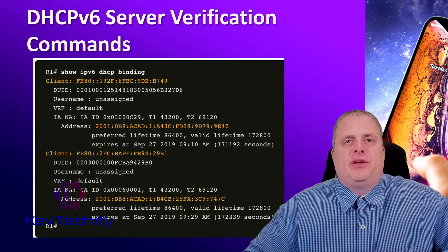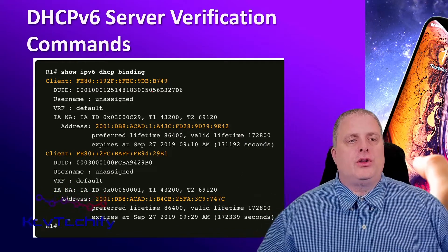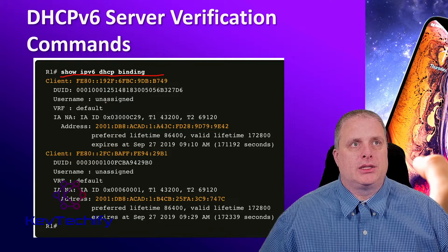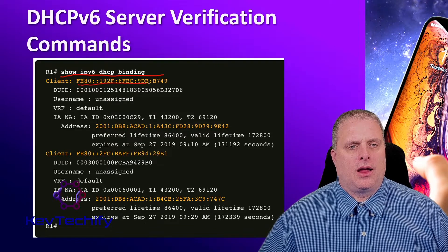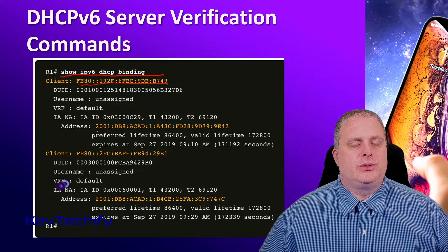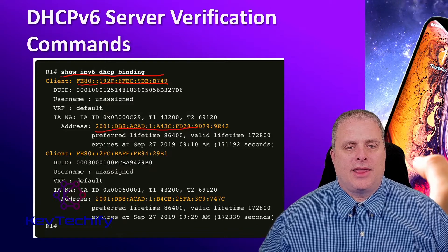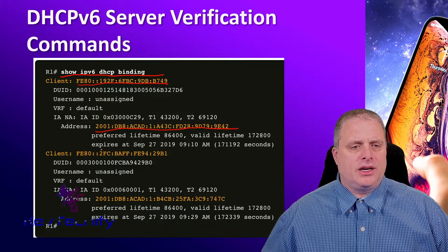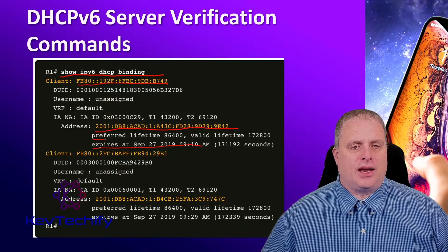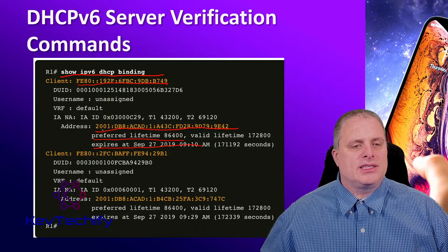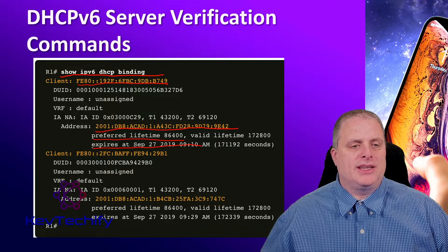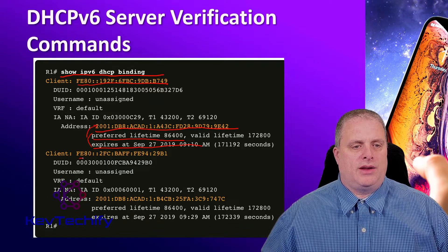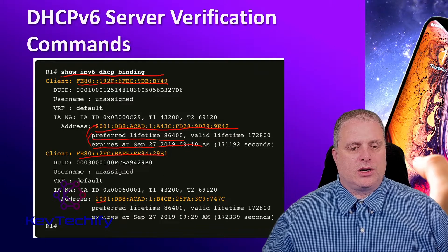To verify your client got the correct DHCP version 6 information from the server, on a router you can issue the command show IPv6 DHCP binding. This command shows us the link-local address of our client, then the GUA — the global unicast address — received from the DHCP server. Because it's a DHCP binding, we know we got it there. You can also see that we have an expiration and a lifetime lease. Down here is another interface with its link-local address and global unicast address.